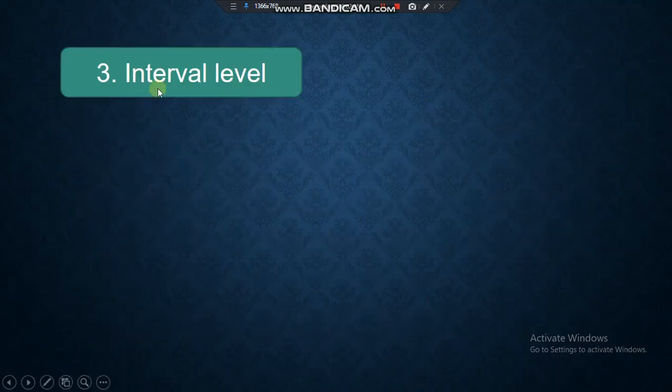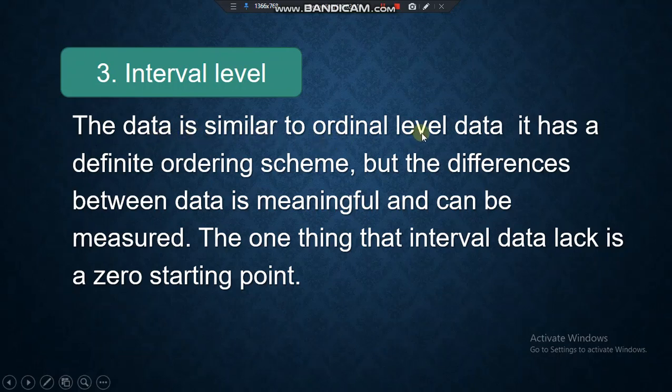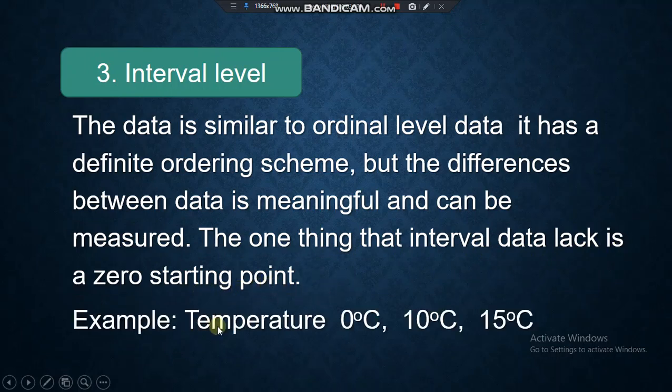Let's have the third level interval. The data is similar to ordinal level data. It has a definite ordering scheme. But, the differences between the data is meaningful and can be measured. The one thing that interval data lacks is a zero starting point. Example: temperature.